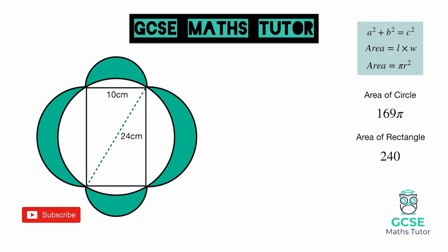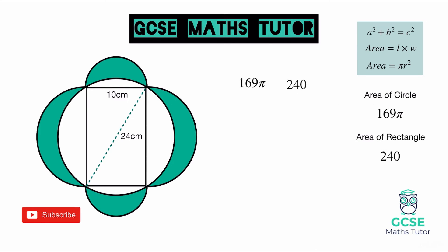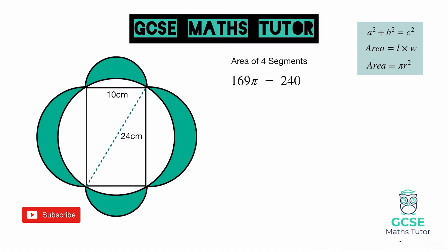What can we do with the area of the circle and the area of the rectangle? If we take away the rectangle from the circle, that gives us the pink shaded area — the four segments around the outside. So the area of the four segments is 169π minus 240.